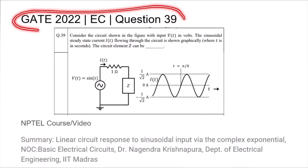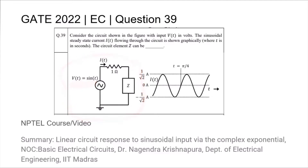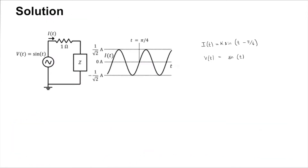This is question 39 from the GATE 2022 EC paper, where we are given a circuit excited by the waveform sine(t) and are asked to find out what the circuit element Z is. Underneath the question you will find the title of the N-bit encoder course video relevant to this topic.